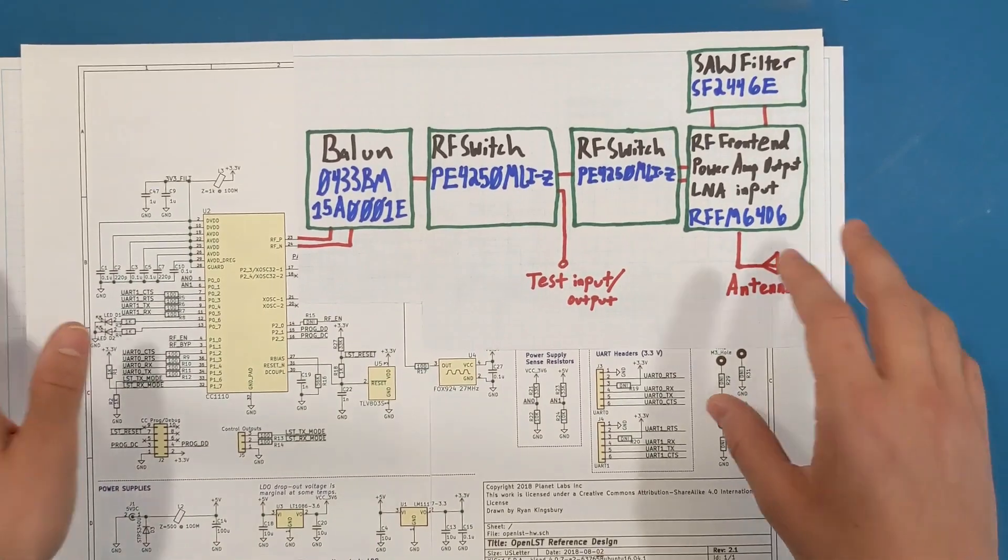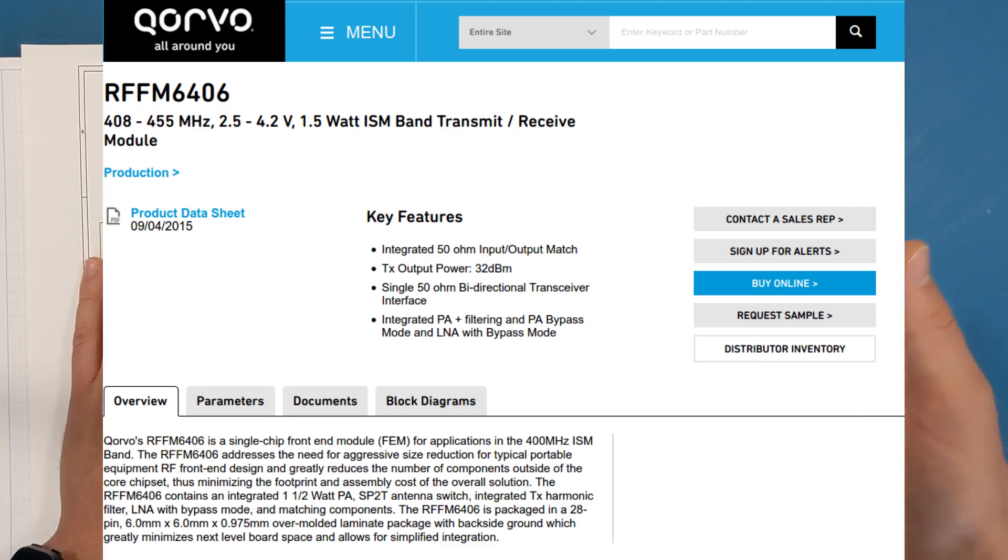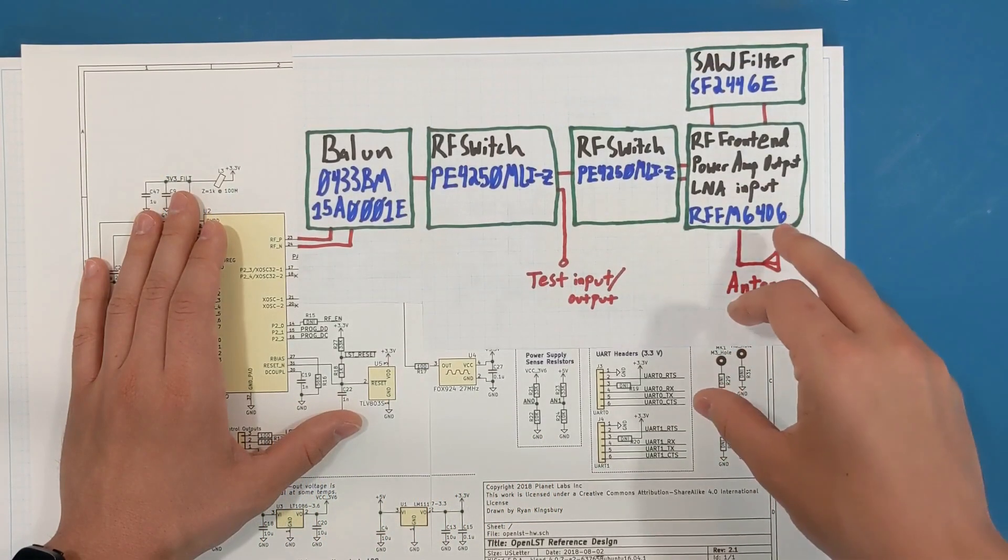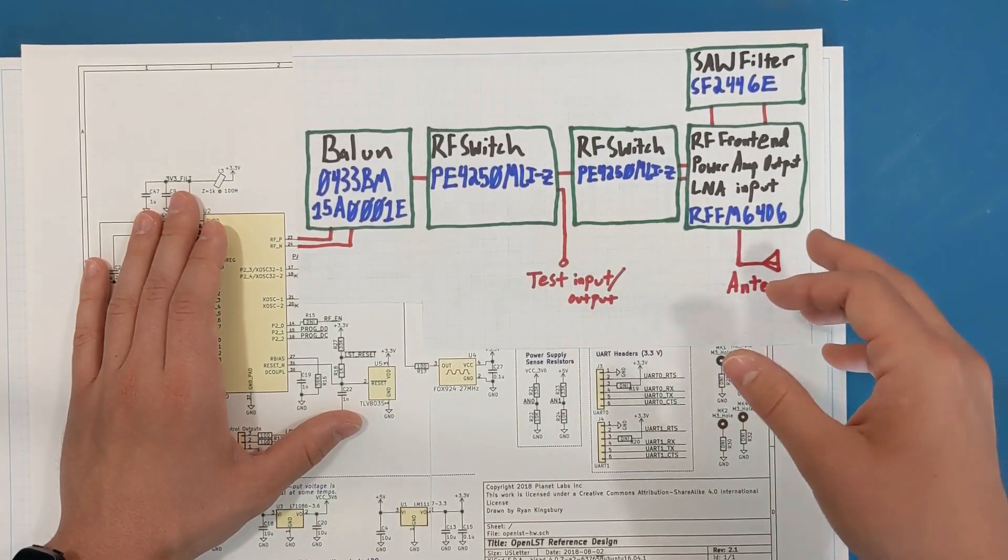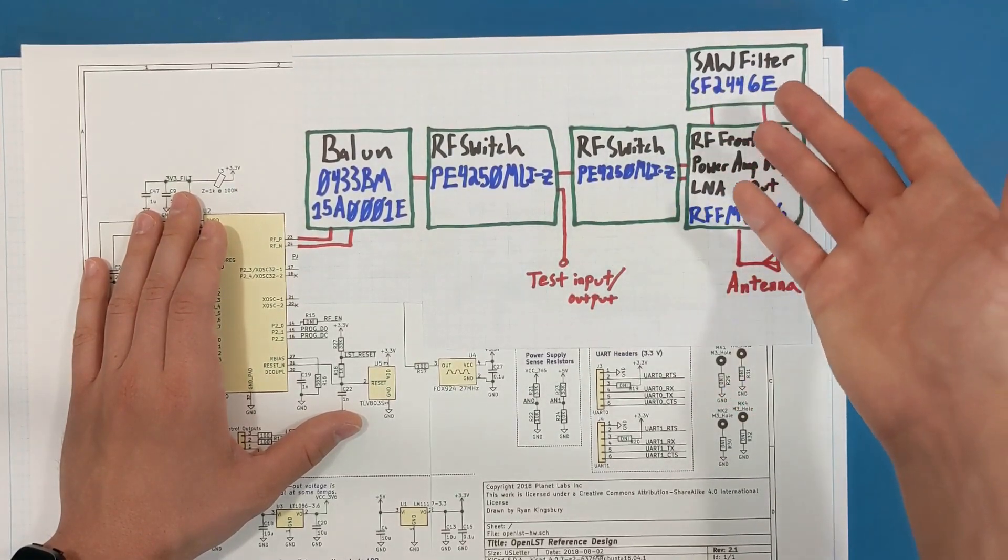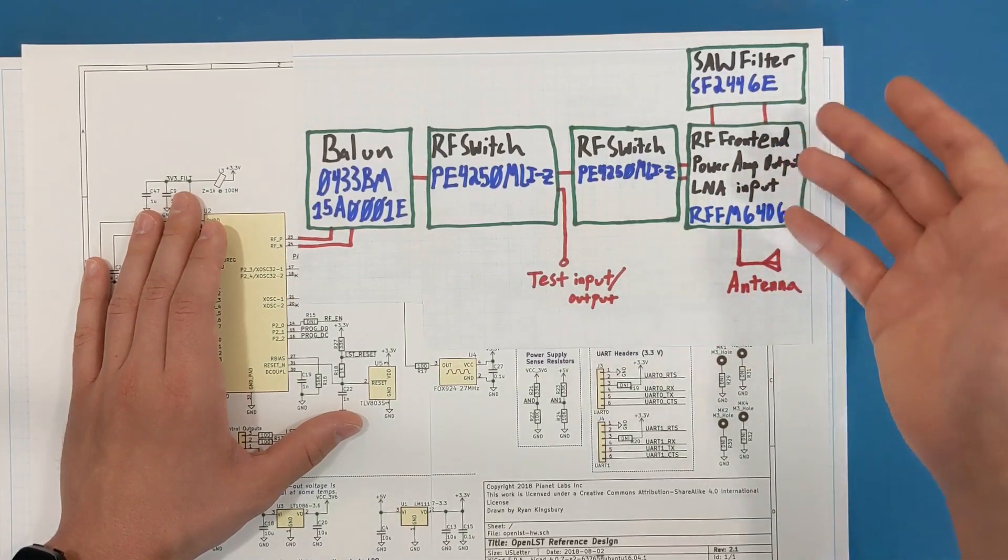The RF front end, luckily there's just a newer one in the same series that has literally the same inputs and outputs, it's just essentially a model year newer. RFFM6406 instead of the 403, so it's a new part. The SAW filter, this is just a Digikey component that has essentially equivalent properties to the special order SAW filter that was on this design already.